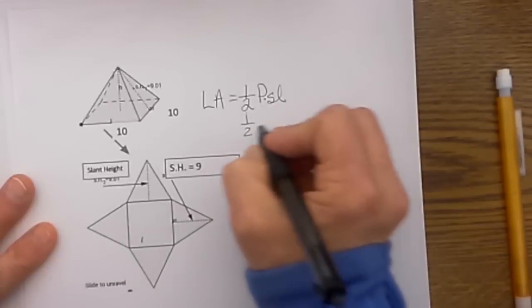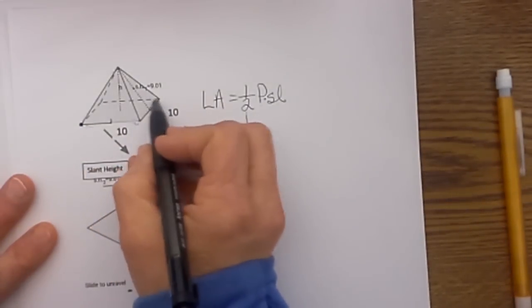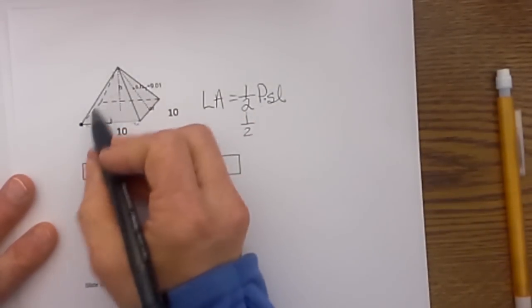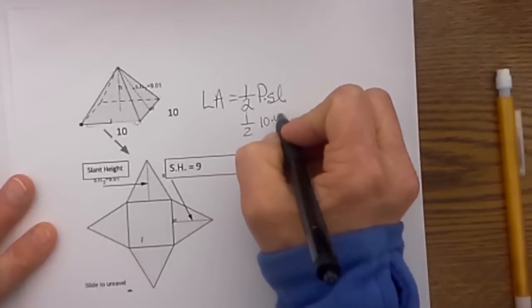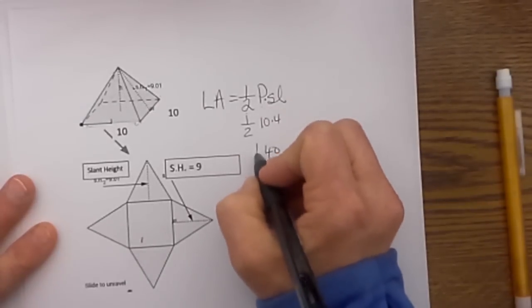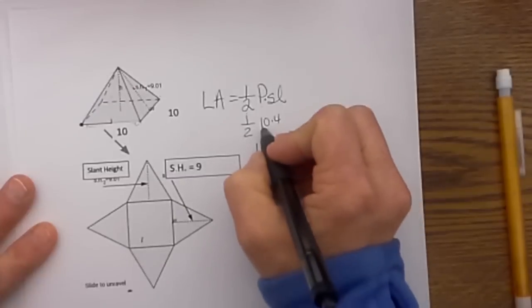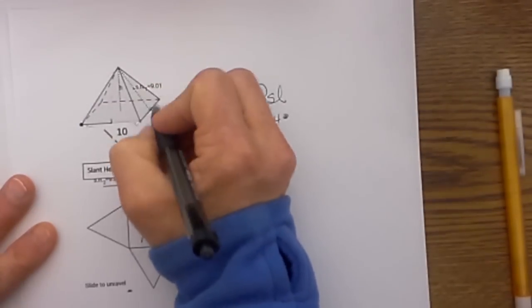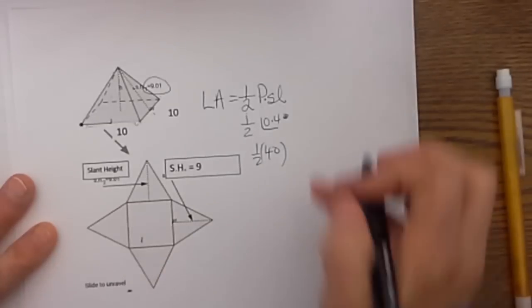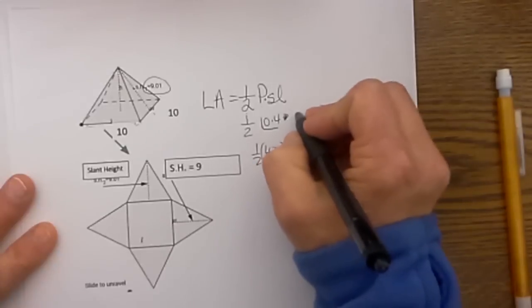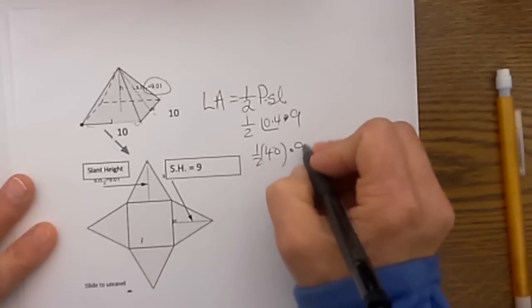So let's find the perimeter first. The perimeter of the base is 10 on each side. So 10 times all four sides is 40. So we have 1/2 of 40 times our slant height. In this case our slant height is given to us as 9.01 we are just going to round it off to 9 for good measure. So we are going to take that times 9.